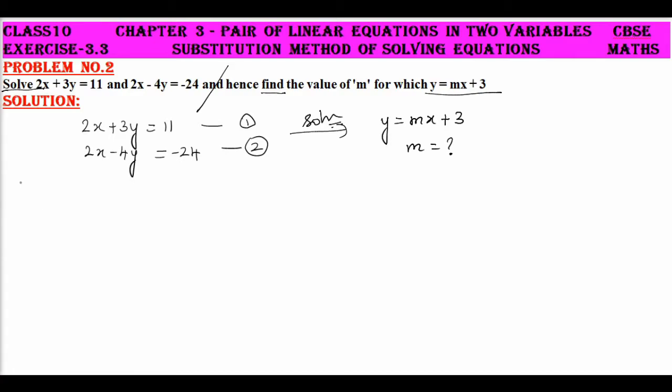Okay, let me consider equation 1. So from equation 1, 2x equals 11 minus 3y. So x equals 11 minus 3y by 2. Let it be equation number 3.